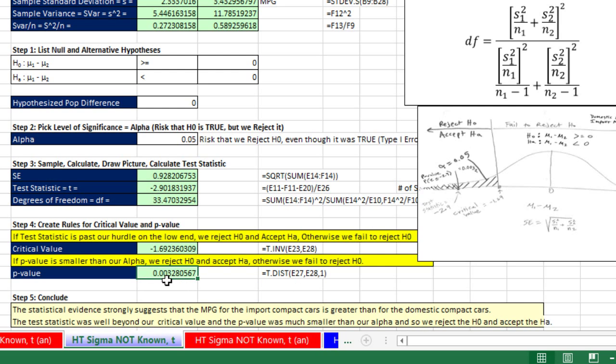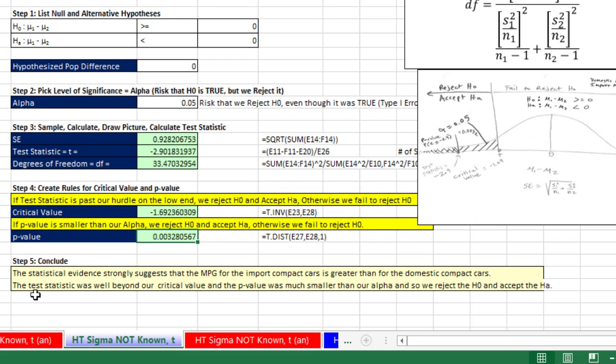Control Enter. And there it is, less than 1%, about 3 tenths of a percent. Very small probability that we could go out and get a sample test statistic like this. So our conclusion, the statistical evidence strongly suggests that the miles per gallon for the import compact car is greater than for the domestic compact cars. The test statistic was well beyond our critical value, and the p-value was much smaller than our alpha. And so we reject the null and accept the alternative.